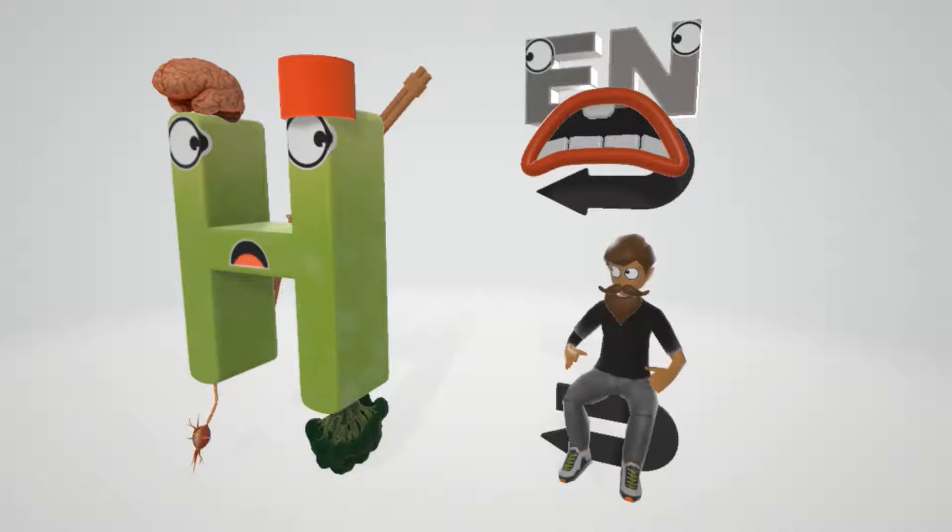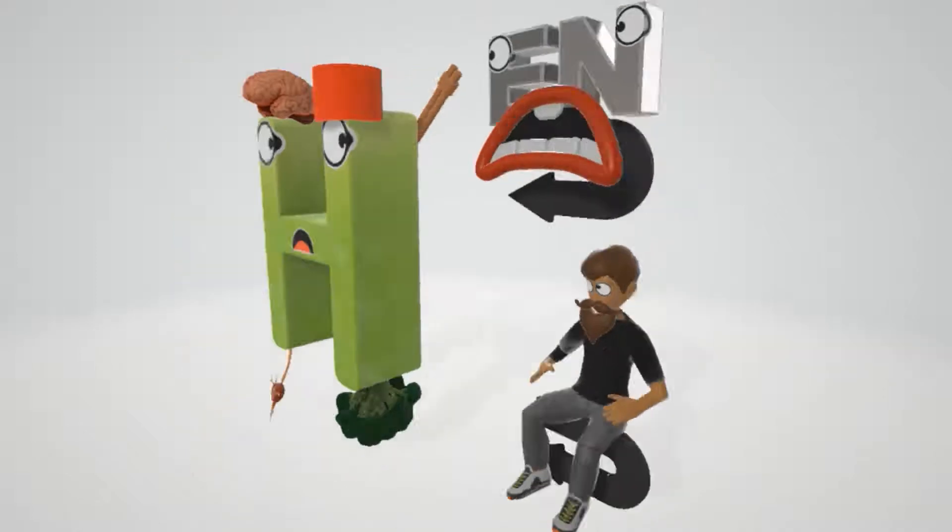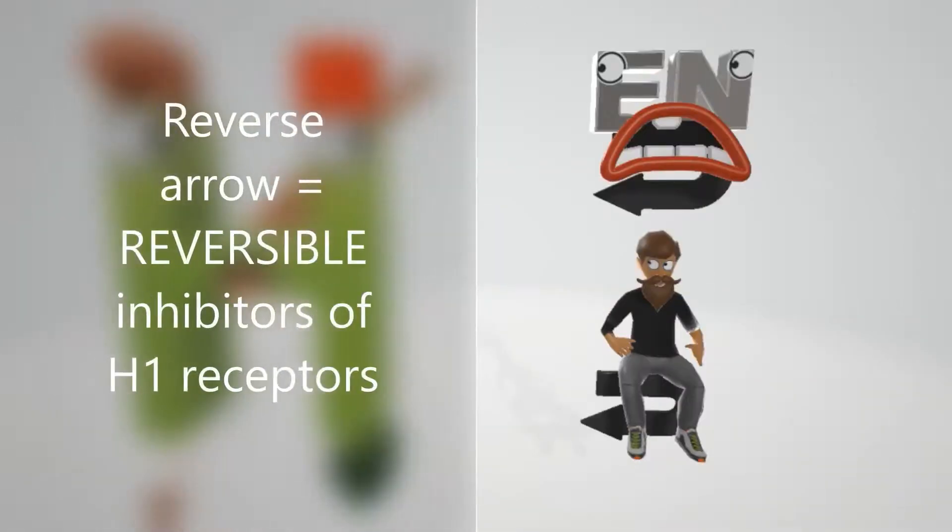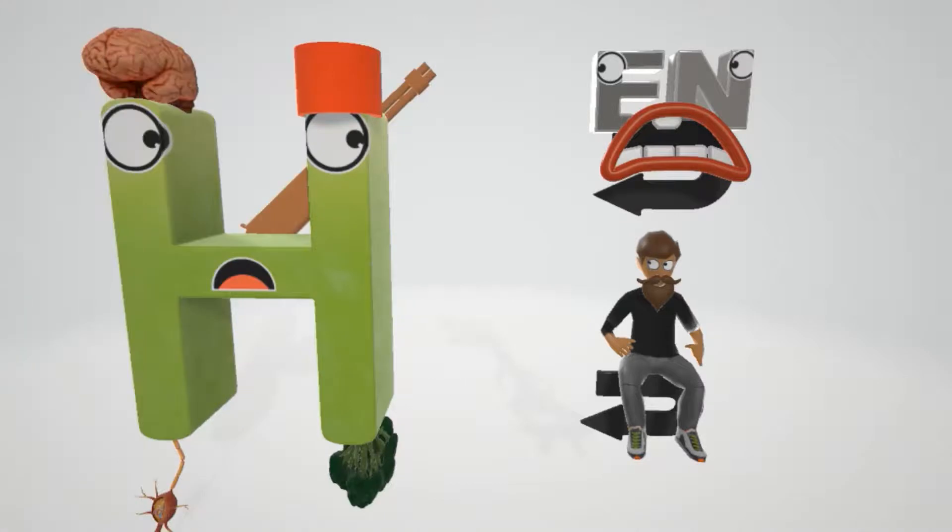If you notice, both of them are sitting on this reverse arrow. This helps us remember that the histamine 1 blockers, the H1 blockers, both first generation and second generation, are reversible inhibitors of H1 receptors. Let's talk about each one now.